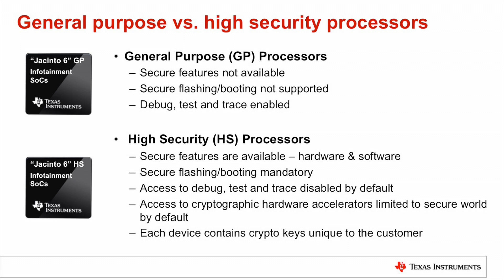Now that we've established the basic definitions of what is meant by security, we can discuss the measures and means that the Jacinto 6 processors employ in both silicon and software to provide security protection. But before we do that, it is important to clarify one point. The standard versions of Jacinto 6 processors, including the DRA-72X, DRA-74X, and DRA-75X, do not provide the security claims that will be discussed. These processors are referred to as general-purpose processors. Versions that include features to assist customers in providing security are referred to as high security, or HS device type, and I'll use these terms interchangeably.